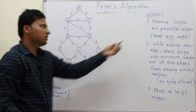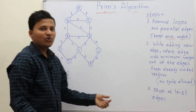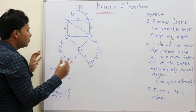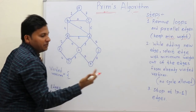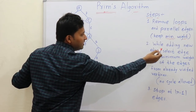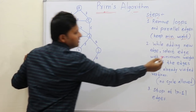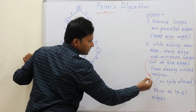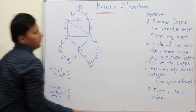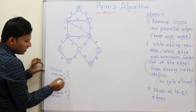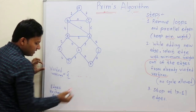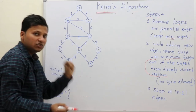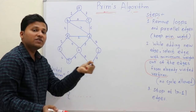So the first step is over now. Let's go for the second step. We are going to add edges for the spanning tree. The second step says: while adding a new edge, select the edge with minimum weight out of the edges from already visited vertices. We will write the visited vertices in a set, and list the edges incident on those visited vertices.